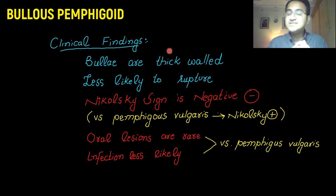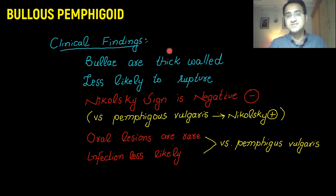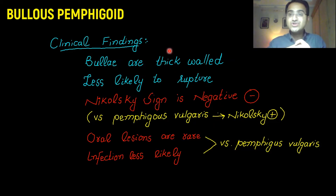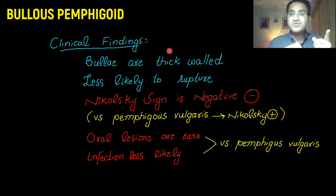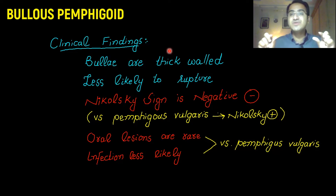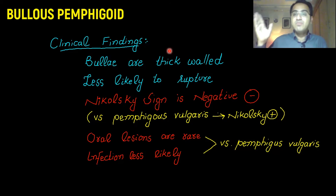Clinical findings of bullous pemphigoid include thick-walled blisters that are very unlikely to rupture, so the Nikolski sign is negative. The Nikolski sign — as discussed in pemphigus vulgaris — is when touching the blister skin causes it to rupture very easily. In bullous pemphigoid, the skin cannot be easily pulled off because there is a thick layer of skin above the blister connected by desmosomes.